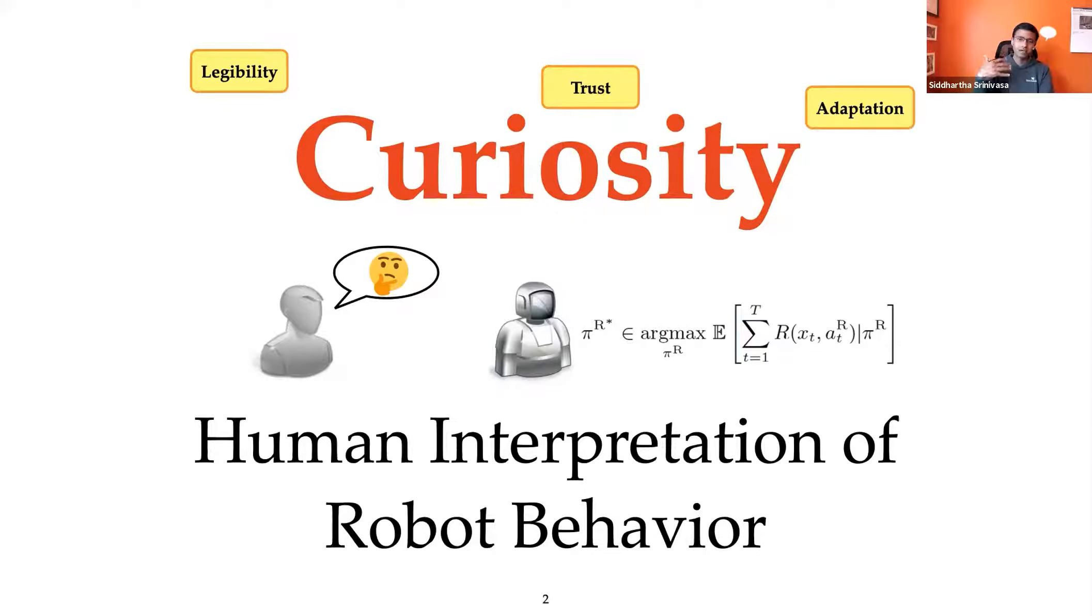I think for me, the human interpretation of robot behavior is critical for how we define things like curiosity or even things I've done in the past, defining legibility or trust or even adaptation. So I'm going to state one tenet that I believe in: if there's no one watching you, then there's no curiosity. So curiosity demands the existence of some observer who is interpreting the robot's behavior. Robot behaves, there is emergent behavior that is human interpretable as curiosity.